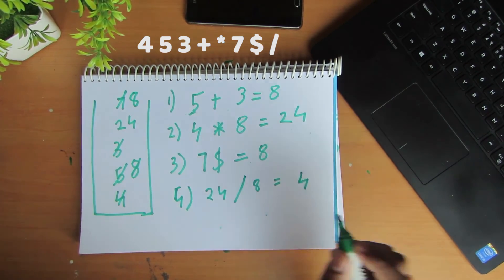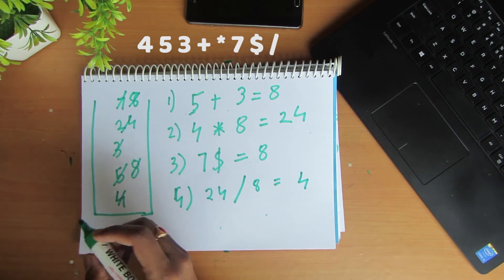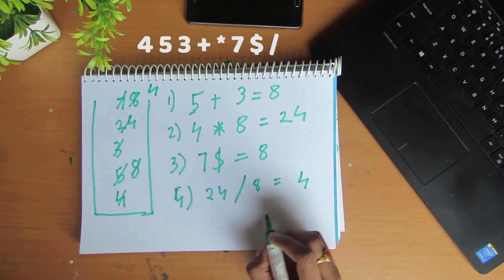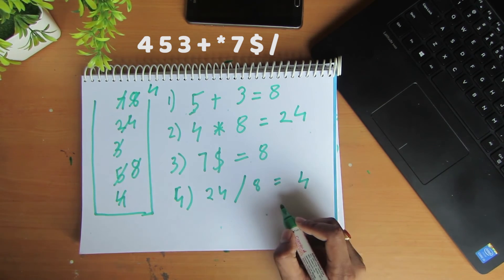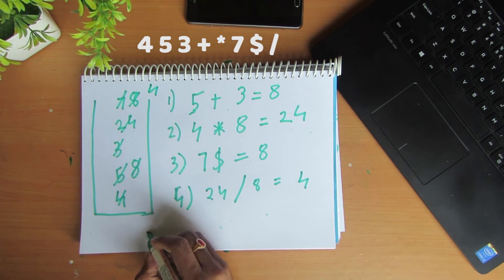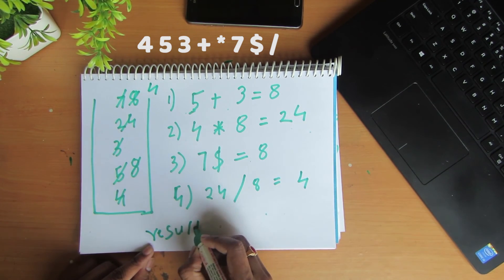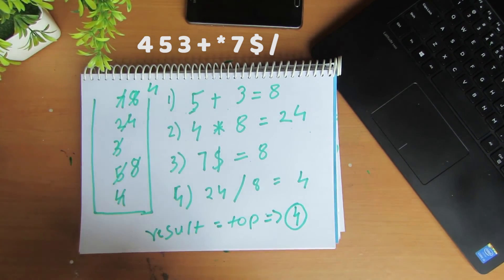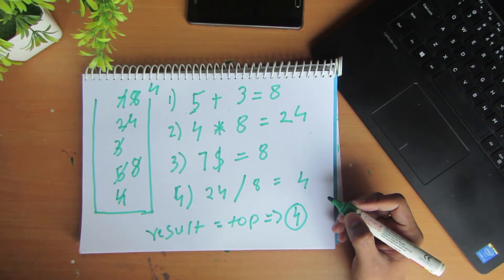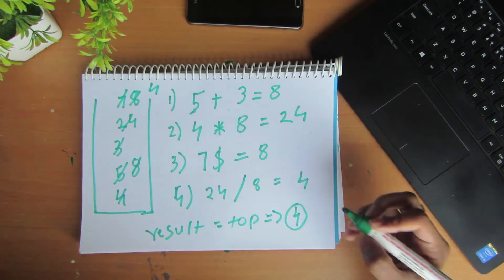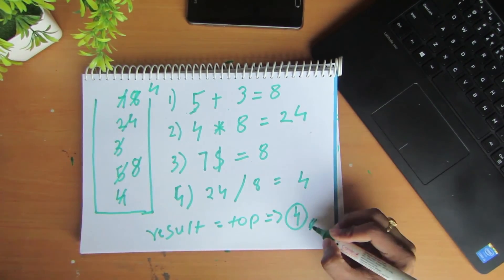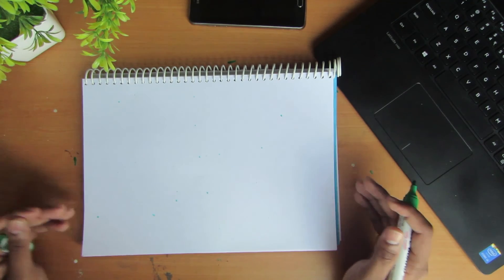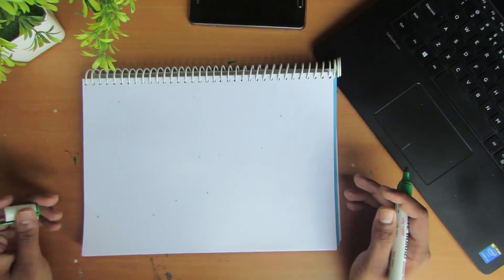We pop the two values and push the result — 4 — onto the stack. We have now reached the end of the postfix expression, so the final result is the top of the stack, which is 4. This is how a postfix expression is evaluated. We've seen how to convert infix to postfix and how to evaluate a postfix expression to get the result — this is a simple implementation of how a calculator can be implemented.